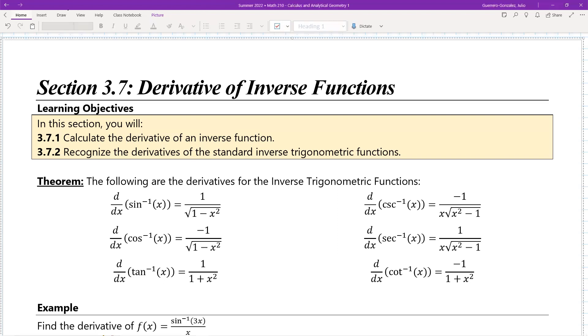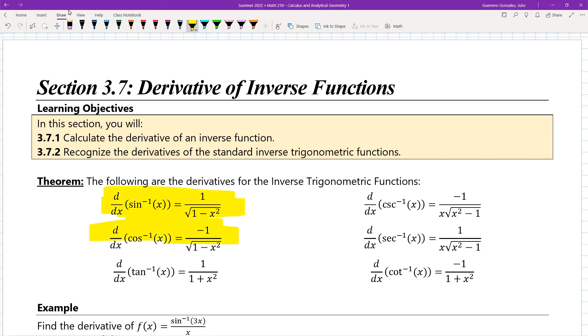So all of these, you have to sort of know that they exist. Those are the three major ones: sine inverse, cosine inverse, tangent inverse, and then the other three, the inverse cosecant, secant, and cotangent. Just need to remember that these are here.